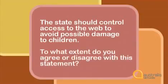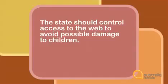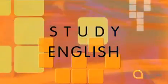The same question task we looked at earlier can be used: to what extent do you agree or disagree with this statement? You are being asked for your opinion. What you need to do here is say what you think about whether the state should control access to the web to avoid possible damage to children — yes or no. Now you should think about reasons for your point of view and why you don't agree with the opposite view. So to recap: the way you respond to the question and the instructions is part of what you are being marked on. The examiners call it task response.